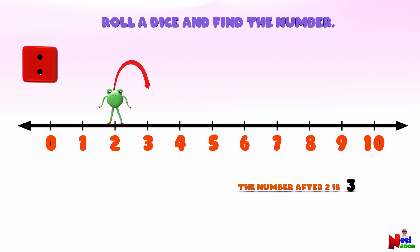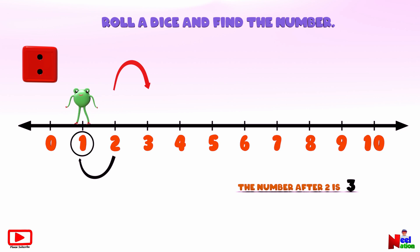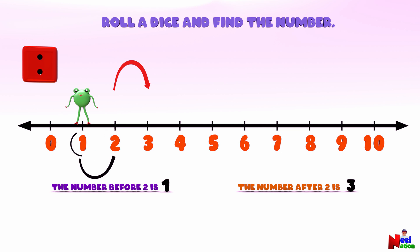Now can you find the number that comes before number two? To know that, you need to take one jump backwards to the left. Mr. Luthu has landed on number one. The number before two is one.